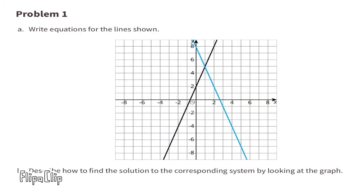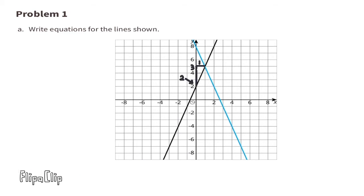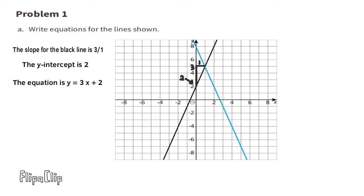Problem number 1, part A: Write equations for the lines shown. Let's start with the black line first. In order to write an equation for this line, we need to find the y-intercept and the slope. It looks like this black line goes through the y-axis right at positive 2, so the y-intercept is positive 2. If we go up 3 units and to the right 1 unit, we can identify the slope as 3 over 1. The equation is y equals 3x plus 2.